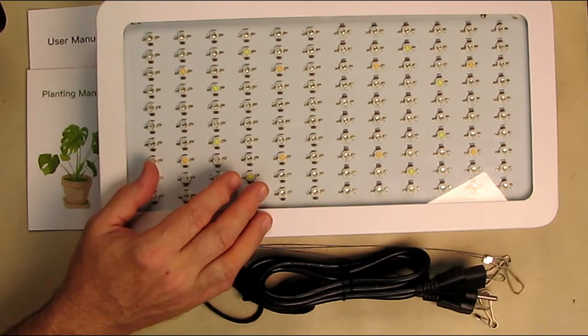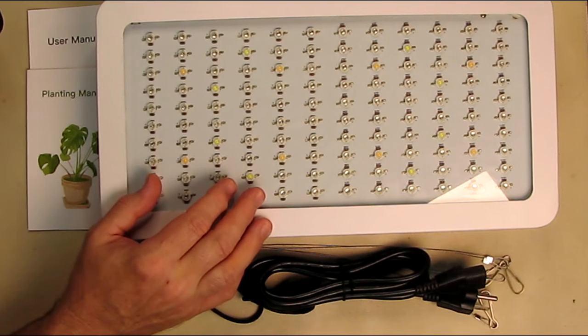As I mentioned, it's got the two switches, the veggie and bloom switches, and I'm going to be testing some seedlings using the veggie setting and give you a time-lapse video and see how it works.